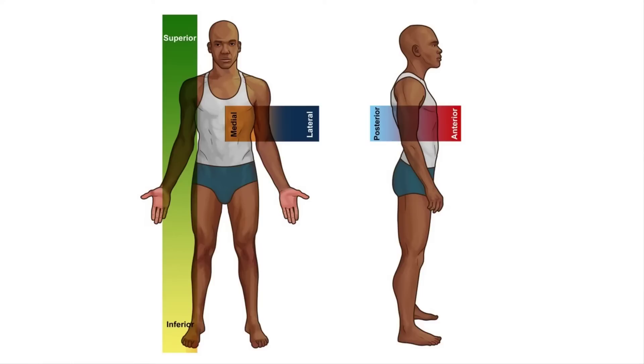Next we have some terms that allow us to be even more specific about where we describe locations. These terms relate to positions in the body and are the anatomical equivalent of up, down, outside, inside, front and back. First we have superior and inferior: superior means towards the head, inferior means towards the feet. Next we have medial and lateral, which relate to the midline. The closer a structure is to the midline the more medial it is; the further away it moves, the more lateral it becomes.